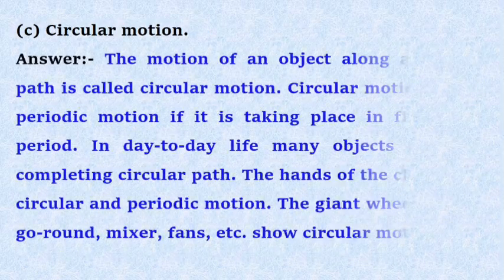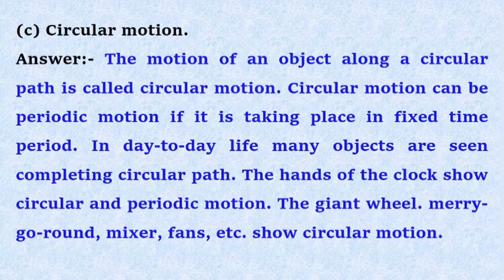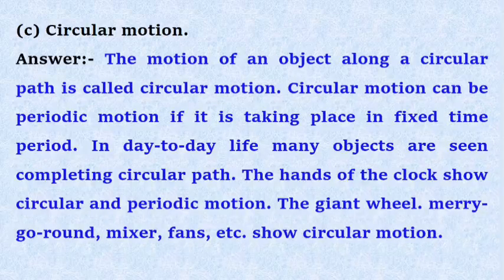C. Circular motion. Answer: The motion of an object along a circular path is called circular motion. Circular motion can be periodic motion if it is taking place in fixed time period.